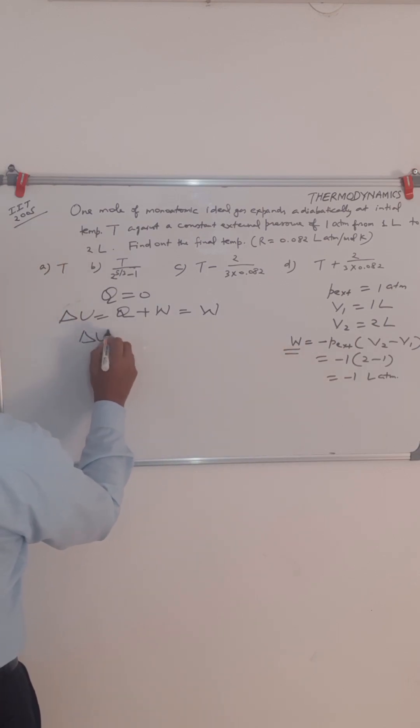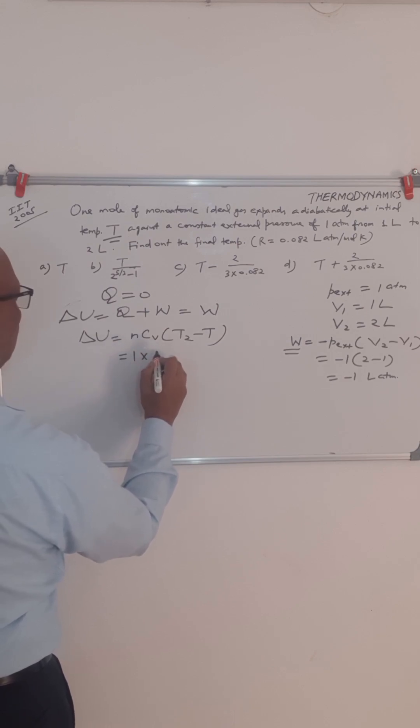So delta U for an ideal gas is given by n Cv times T2 minus T1. Here T1 is T because initial temperature is T. Number of moles is 1 and Cv for monoatomic ideal gas is 3 by 2 R.